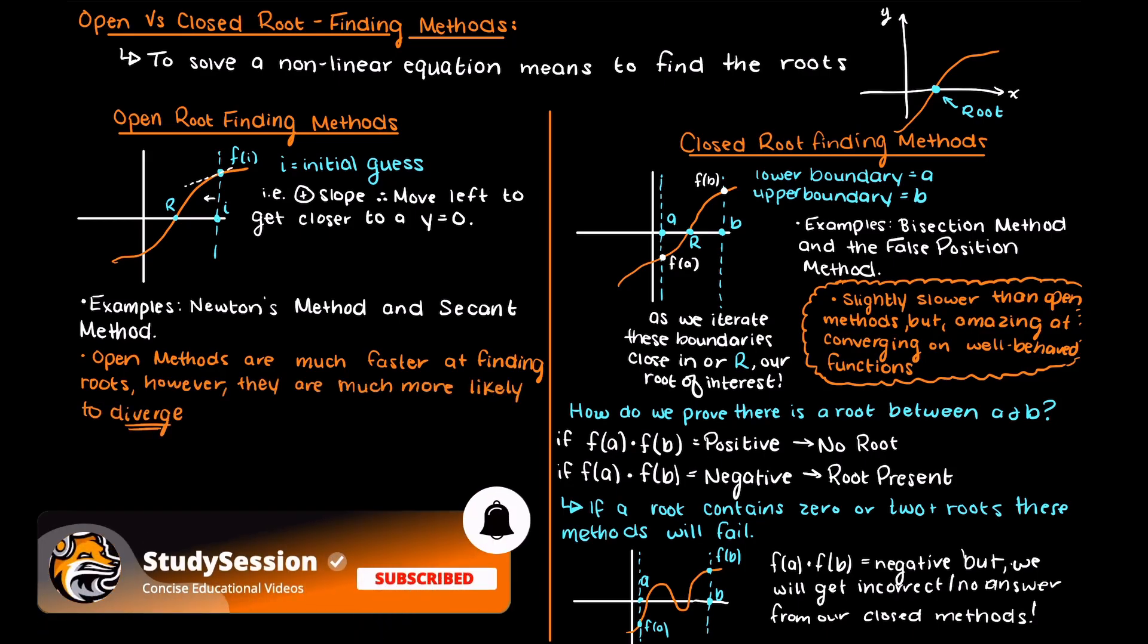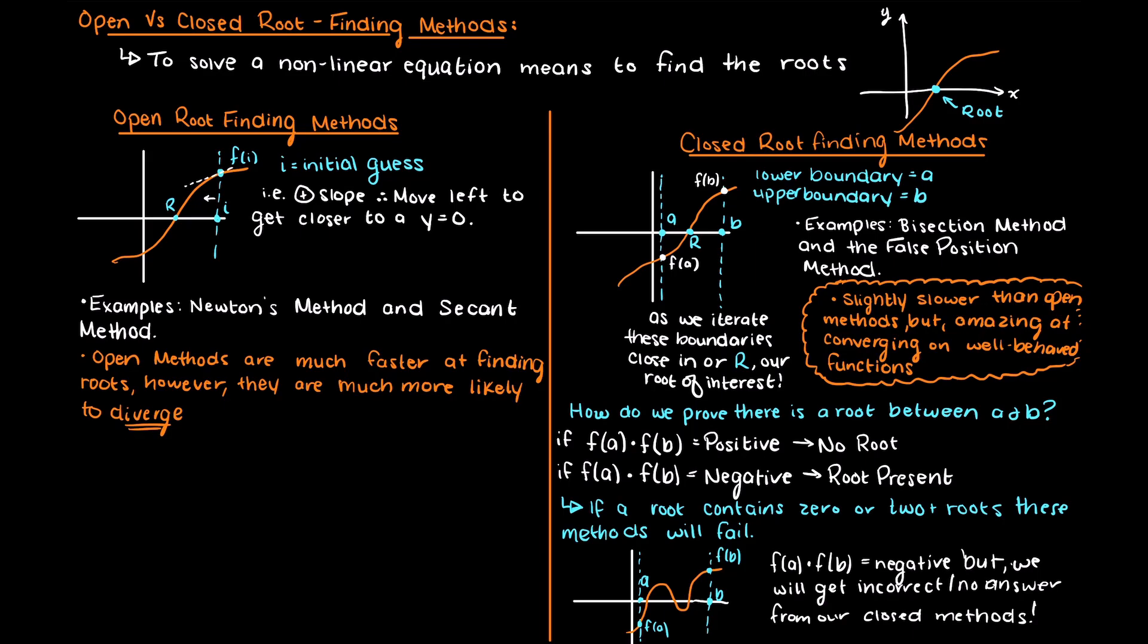as a counter to this, open methods are much more likely to diverge, which means that they will not be able to find the root - we will just move further and further away from it.